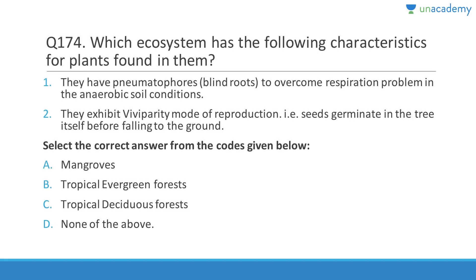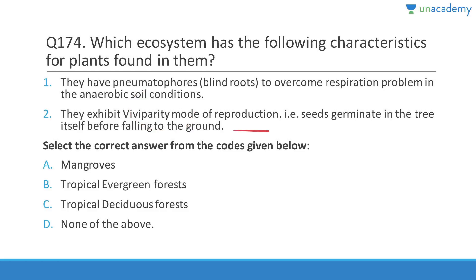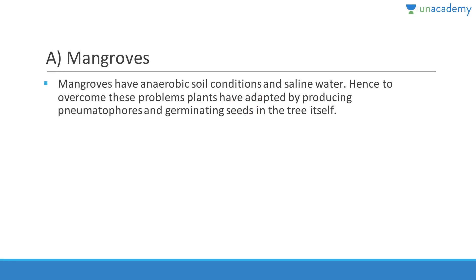Mangrove ecosystem plants have pneumatophores — pores in plant roots that help in respiration because mangroves grow in marshy areas where air is not present in the waterlogged soil. They also exhibit viviparity — seeds germinate in the tree itself before falling to the ground. These adaptations help plants survive anaerobic soil conditions and saline water.